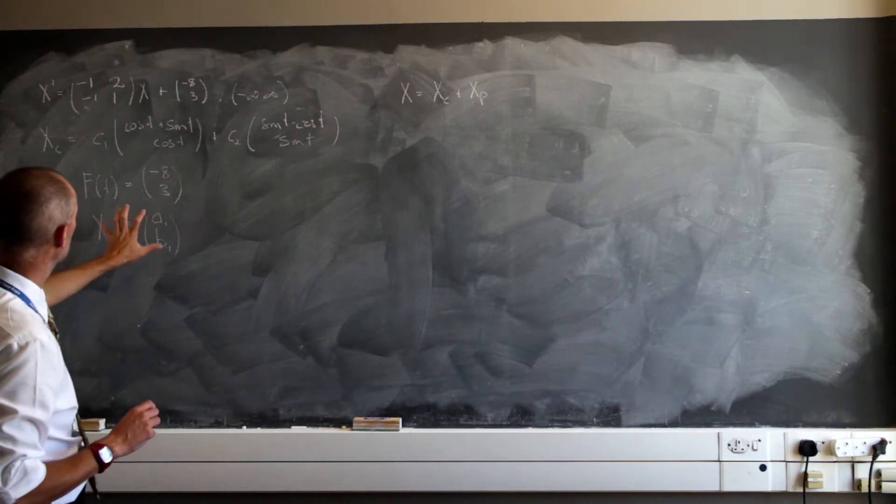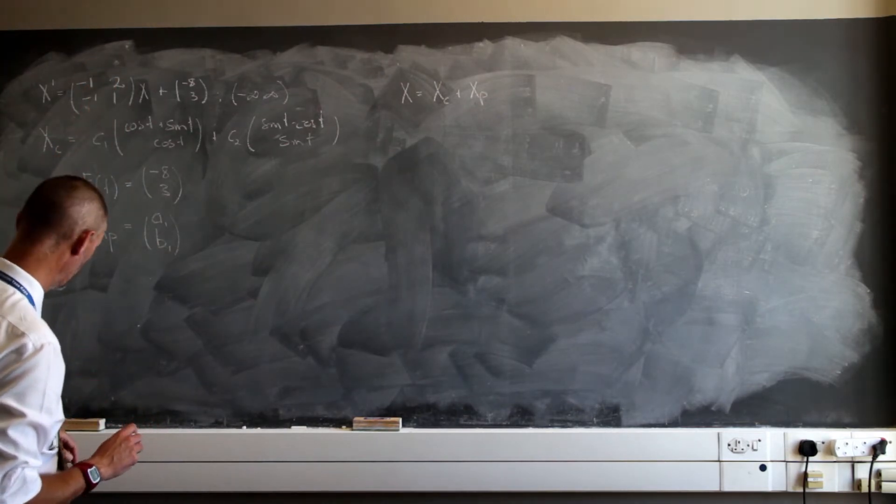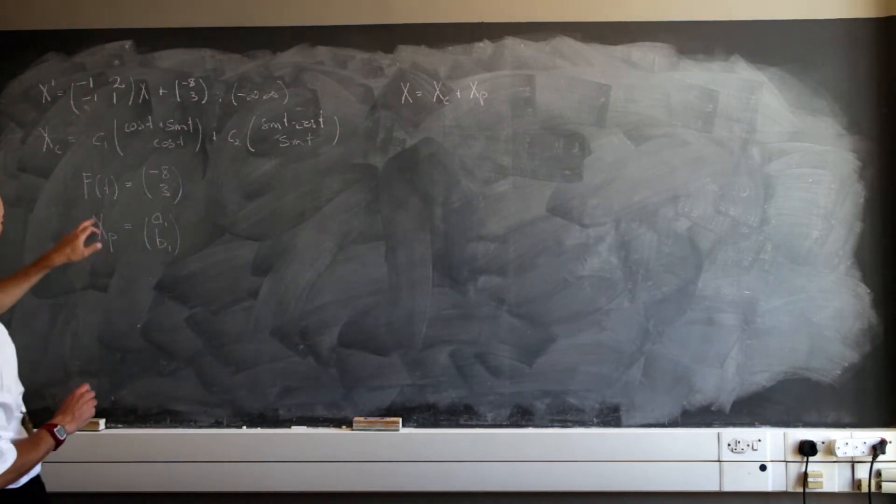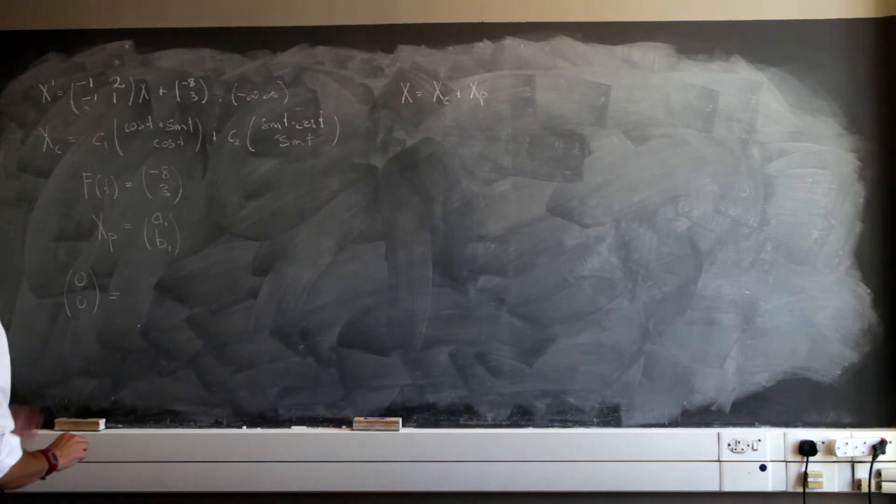So if I would substitute this into my original problem there, what am I going to get? Well, what would be the prime of this, prime of a constant and a constant? Well that's going to be 0, 0, for x prime.